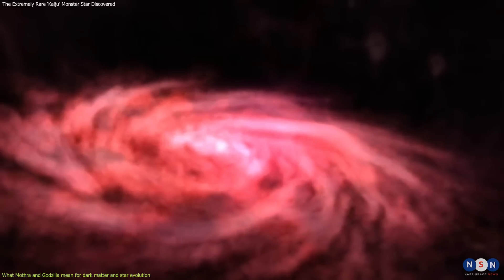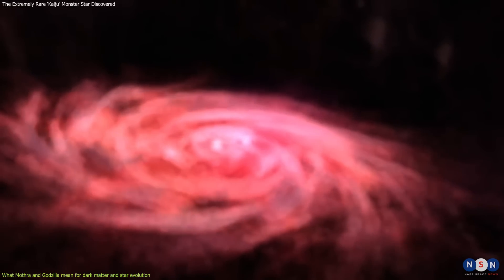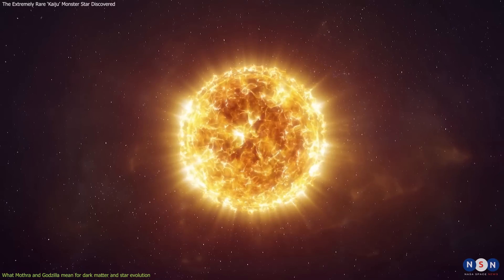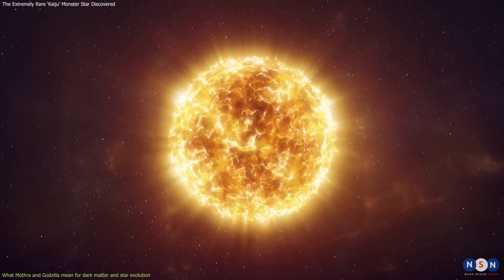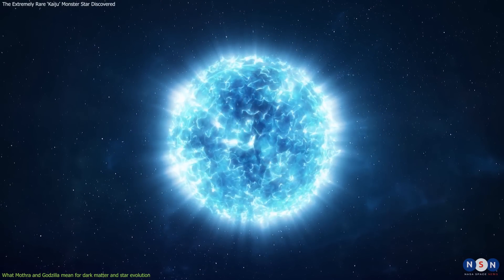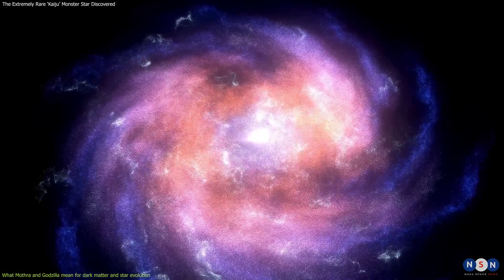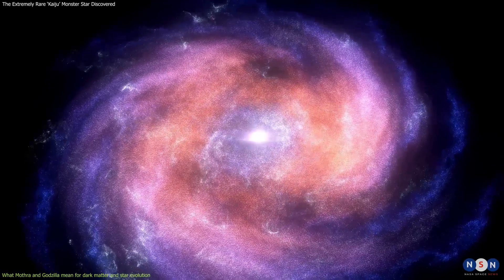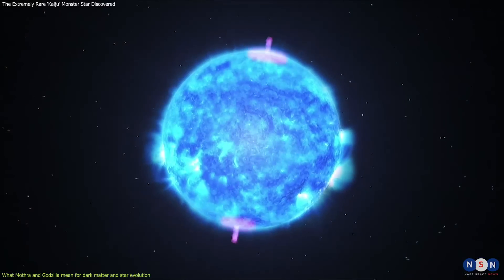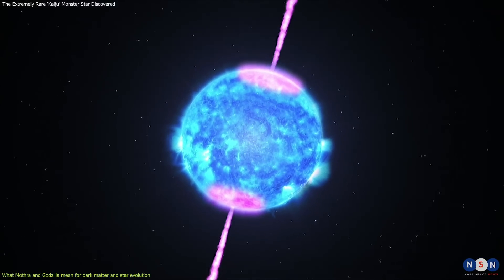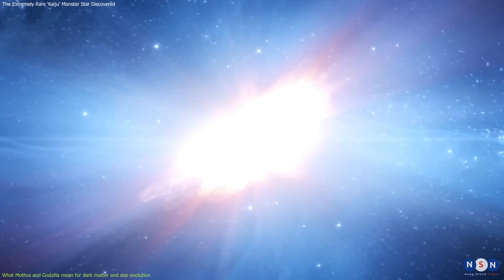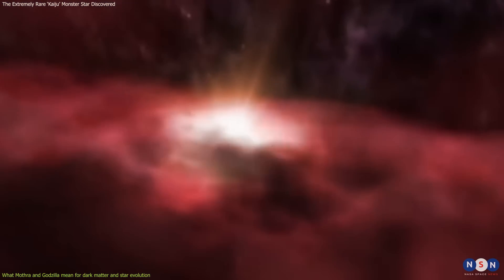These stars are also a valuable source of information for astronomers to understand the formation and evolution of stars, especially the rare and extreme types of stars like red supergiants and blue supergiants. These stars are very important for the chemical enrichment and feedback processes in galaxies because they produce and disperse heavy elements and energy through nuclear fusion and supernova explosions.